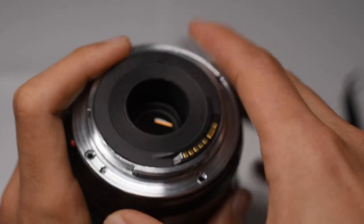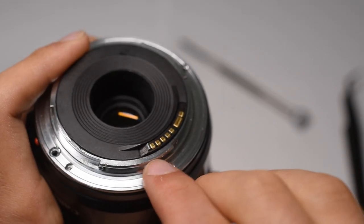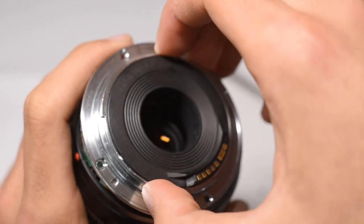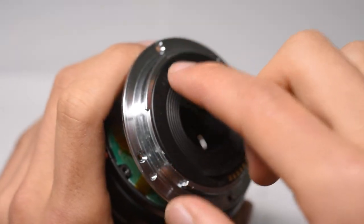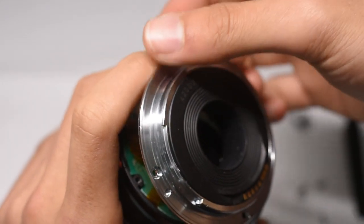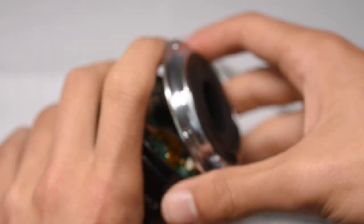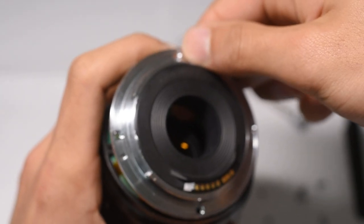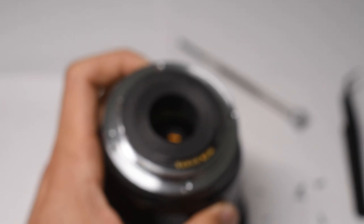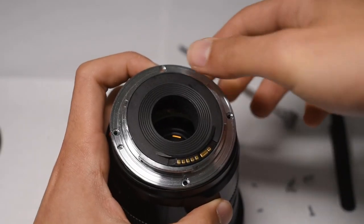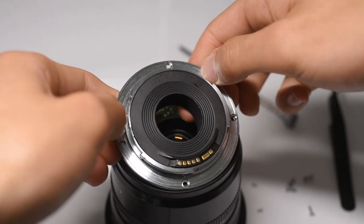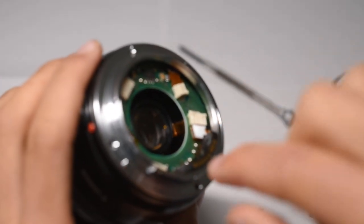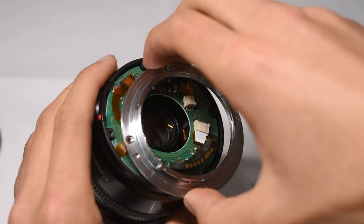Now when you get to this part, be careful because this is connected to a circuit board. You don't want to rip that out of the circuit board, otherwise your lens is going to be permanently broken. So just lightly take it out. This plastic part, it comes right off, it's not screwed in or anything. So just with it in this position, just slowly and lightly push it out from the inside. Like that. And since this isn't screwed in anymore, you can just take it off like that.